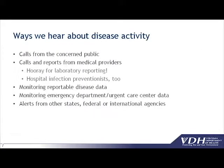Ways we hear about disease activity include calls from the concerned public — maybe they attended a group meal and a bunch of people are sick. We get reports from medical care providers by call or through the regular disease reporting process. Lab reporting is fantastic, and without the labs we wouldn't know much about what's going on with disease in Virginia. Hospital infection preventionists are also great eyes and ears. We can monitor reportable disease data for trends, patterns, and spikes, and monitor emergency department and urgent care center data similarly. We also get alerts from other states, CDC, and international agencies.